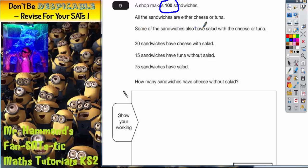All of the sandwiches are either cheese or tuna. Some sandwiches also have salad with the cheese or tuna. 30 sandwiches have cheese with salad. 15 sandwiches have tuna without salad. 75 sandwiches have salad. How many sandwiches have cheese without salad?